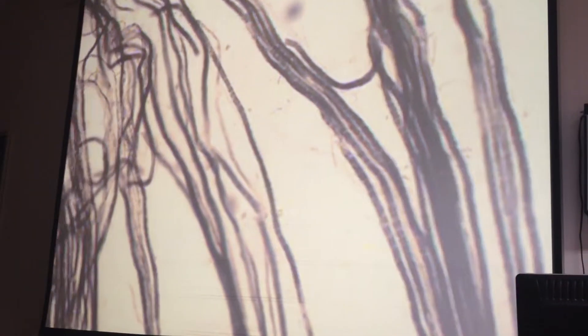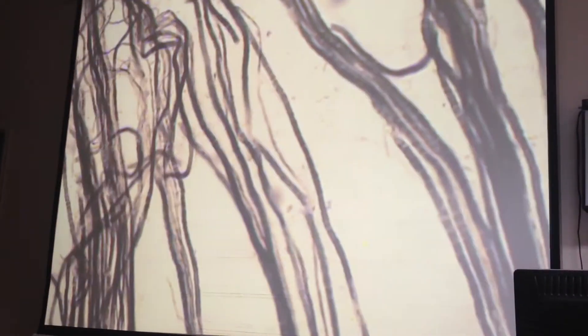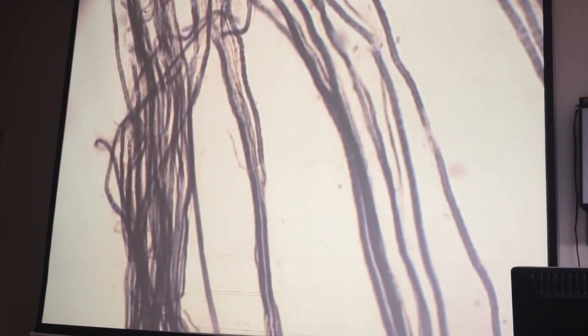which is a node of Ranvier, or also called a myelin sheath gap. And that's just the breaks between the Schwann cells.